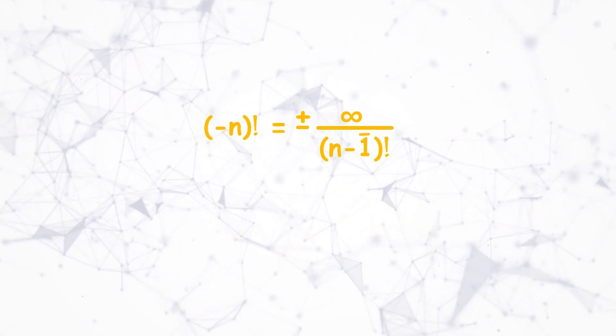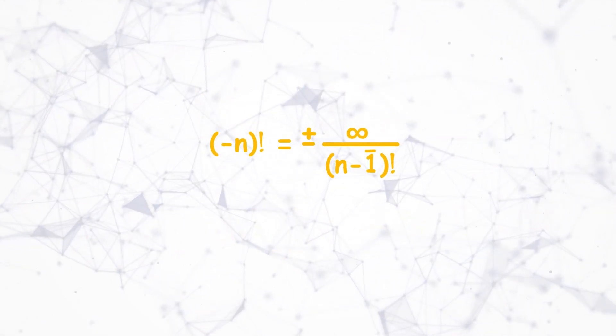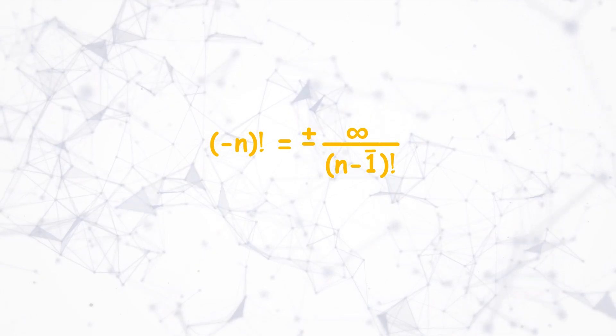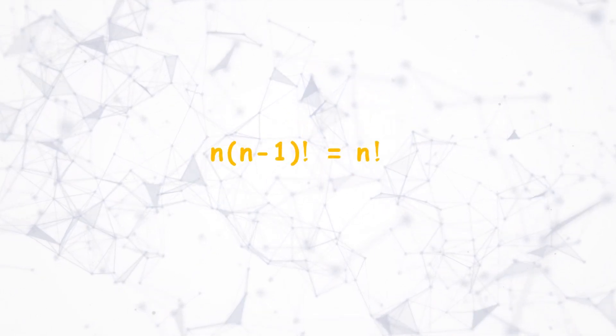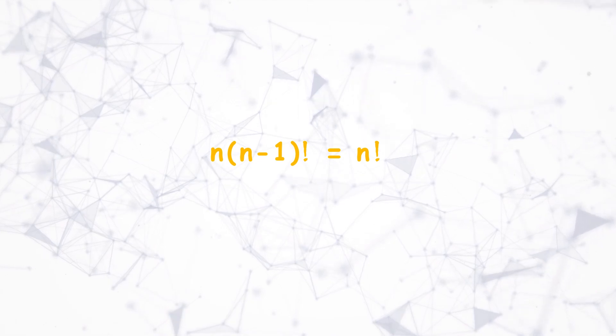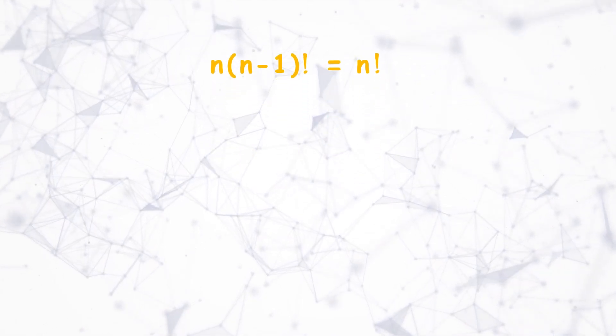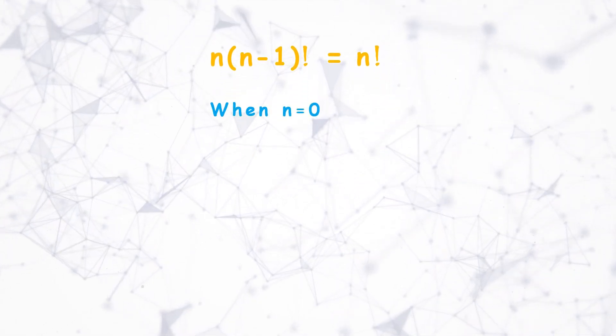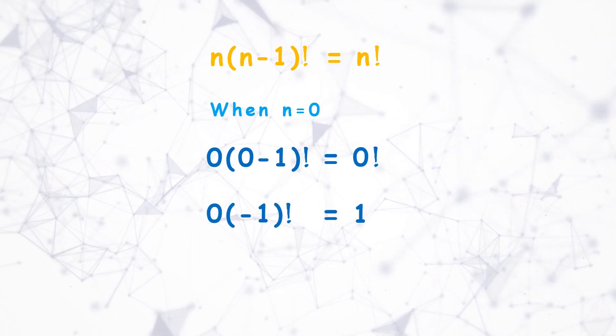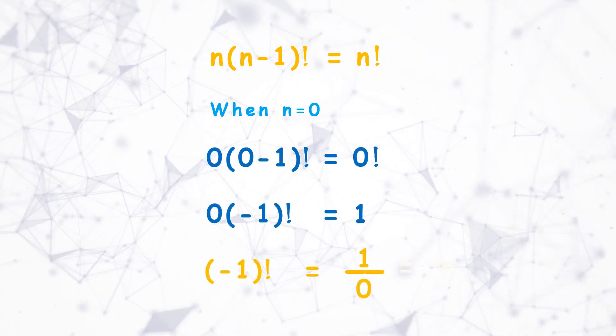Negative factorial formula is discovered using three steps. First, the pattern is followed using existing factorial formula in universal number domain. For example, if we substitute n equals 0 in this formula then we get negative 1 factorial as 1 by 0, in other words infinity.